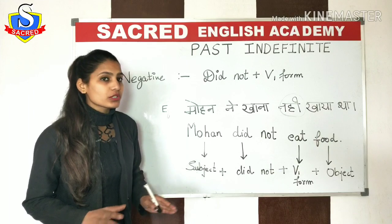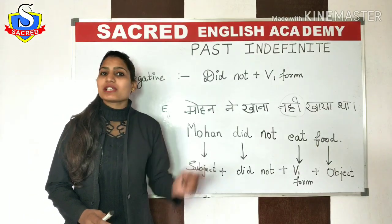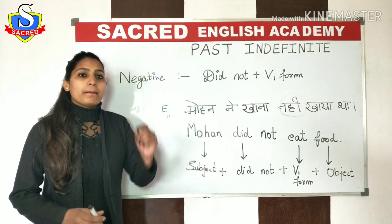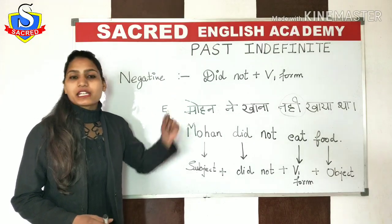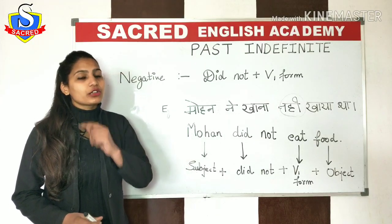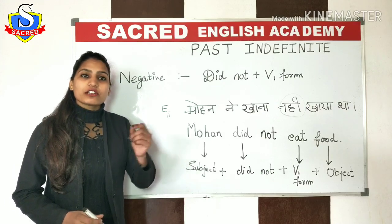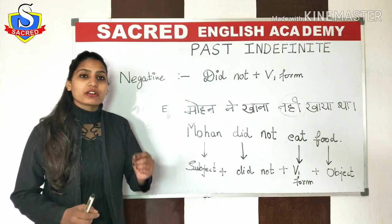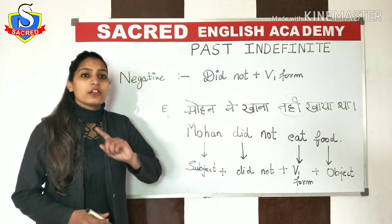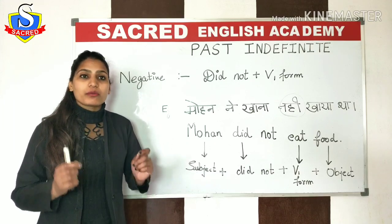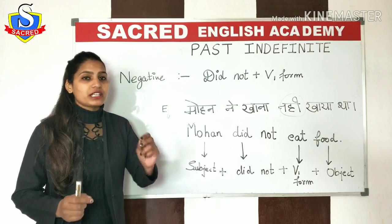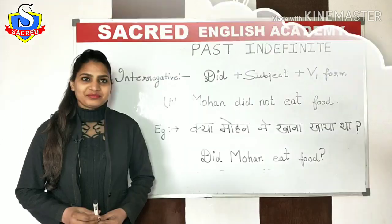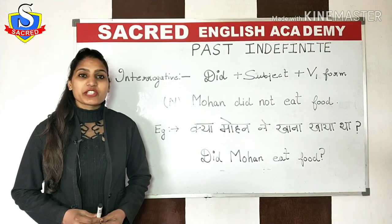Make sure aapko confused bilkul nahi hona — because humne pichle simple sentence mein verb ki second form ka istamal kiya tha. But here, jab bhi hum negative, interrogative, ya interrogative plus negative ki baat karte hain, toh aapko sirf verb ki first form ka istamal karna hai. No second form is going to be used in these three parts of Past Indefinite. Then we have the interrogative sentence.